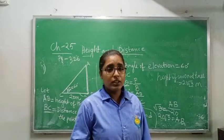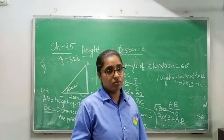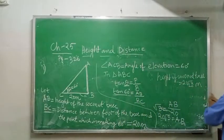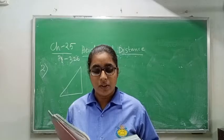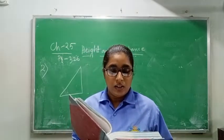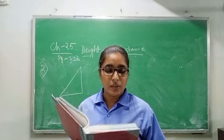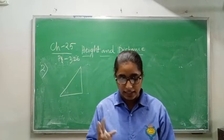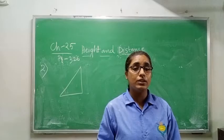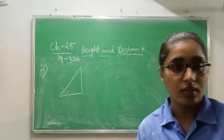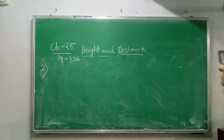AB is the height of the coconut tree. So the height of the coconut tree equals 20 root 3 meters. If you know that root 3 equals 1.732, you can substitute it. Sometimes the question gives root 3 = 1.732 and sometimes not. You can either substitute or leave the answer as 20 root 3 meters.